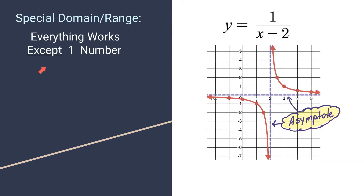This is an example of a graph that works for everything except for one number. This is a hyperbola graph, and what makes a hyperbola graph special is it has every number work from the positive infinity side shooting up, and then coming in from the negative infinity side going down. Every number works for x except when x equals 2, because if x equals 2, it creates a zero in the denominator, which is undefined for an output. That's why you see this vertical line here — this is called an asymptote. It's a dotted line the graph gets close to but never becomes.